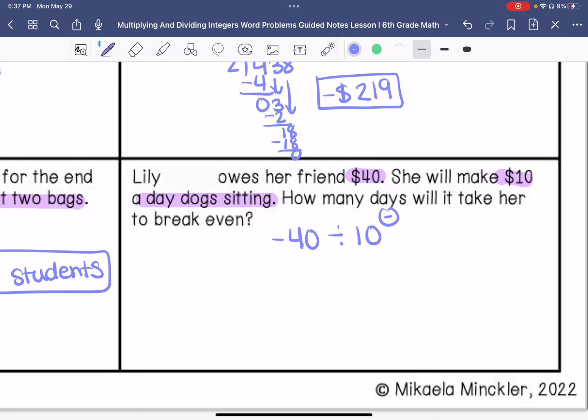So our answer is going to be negative. So it would be negative 4 days, but time cannot be negative. So my answer is going to be 4 days.